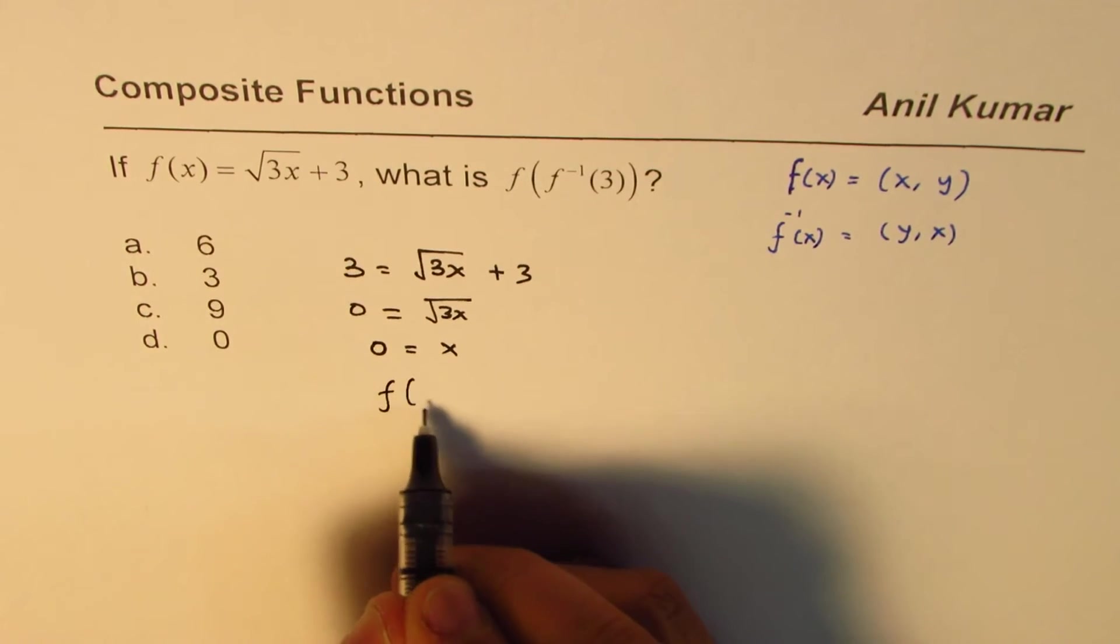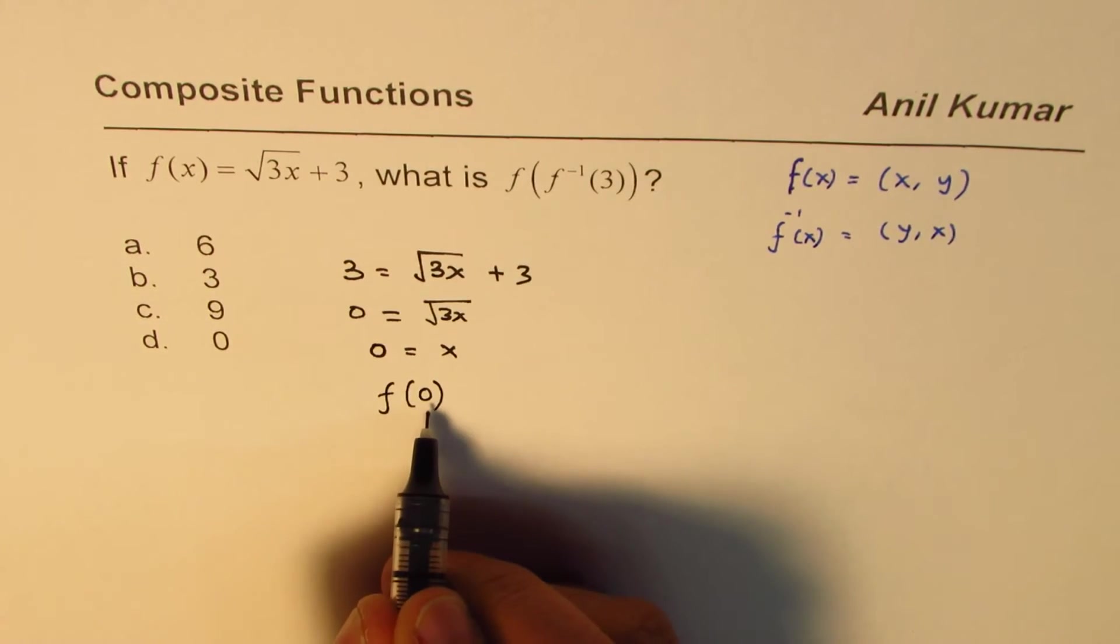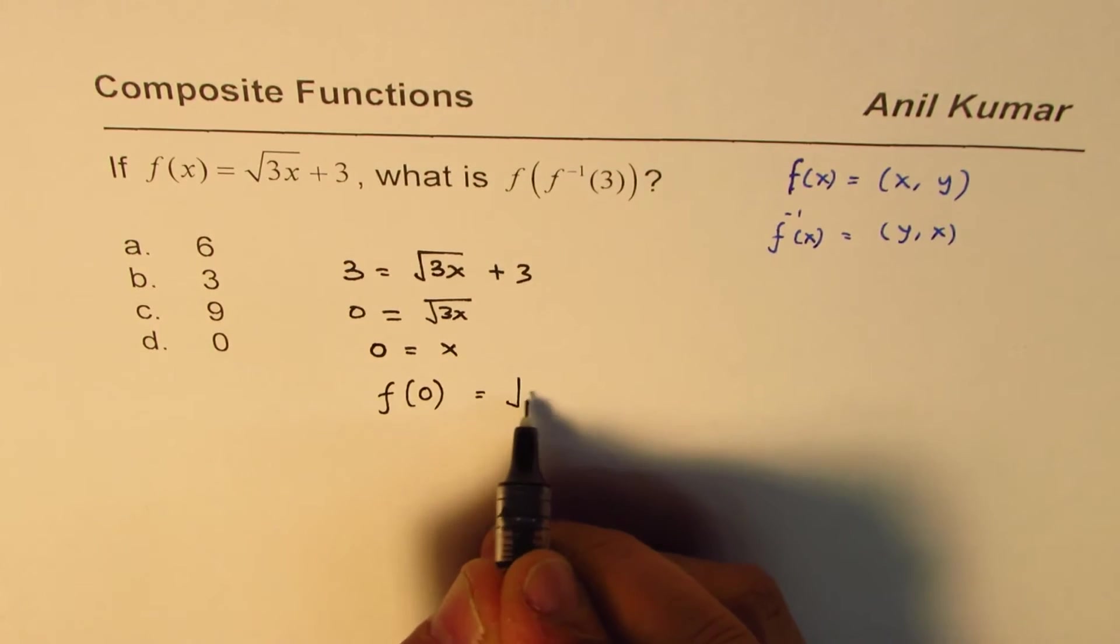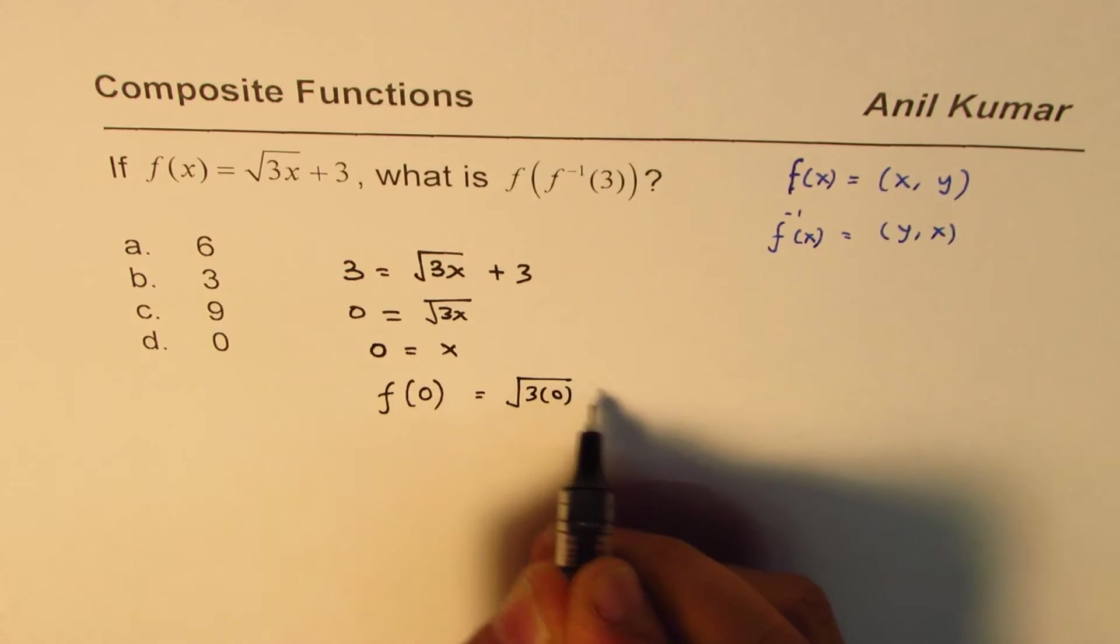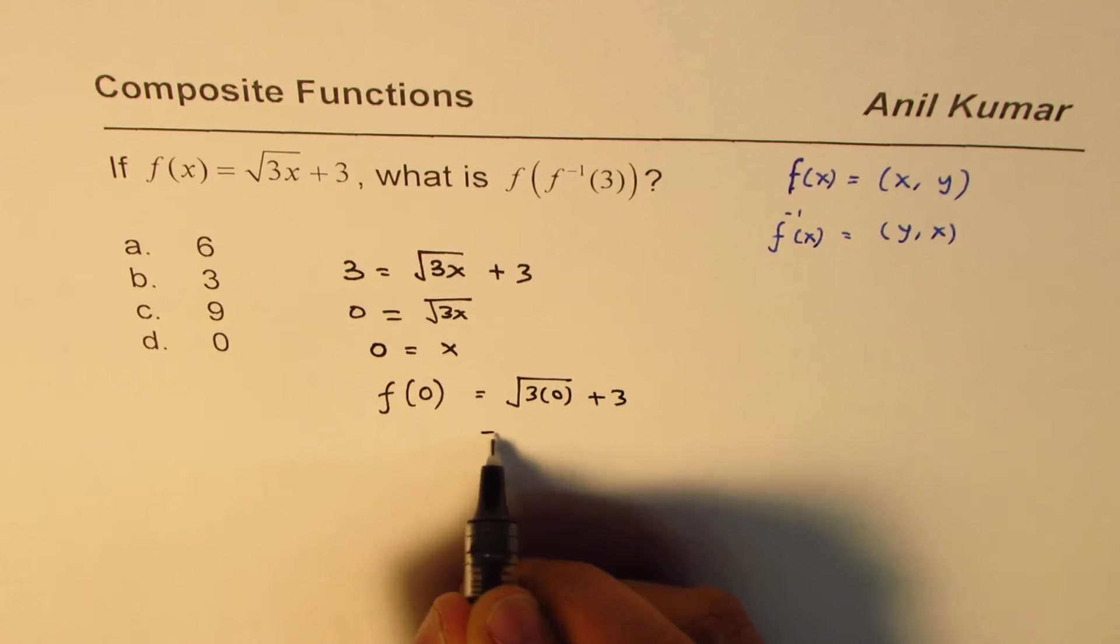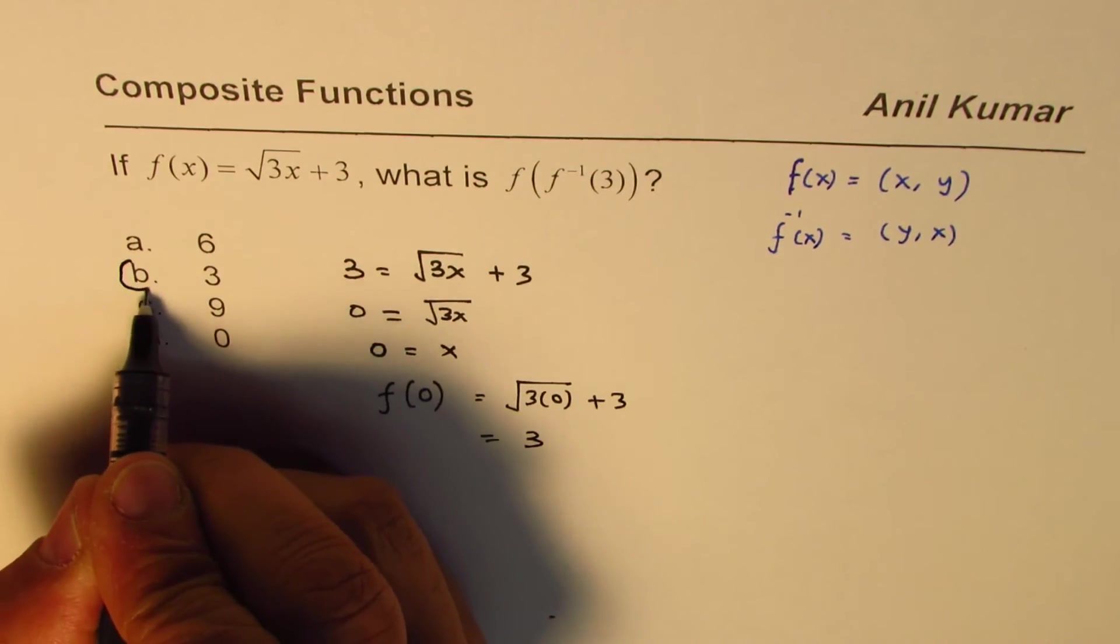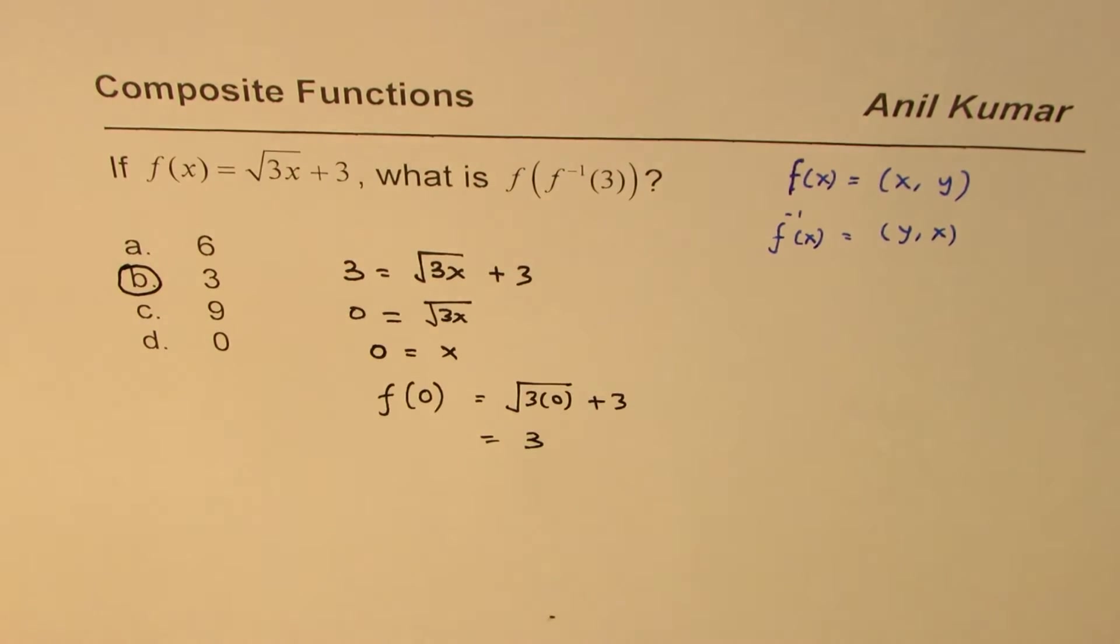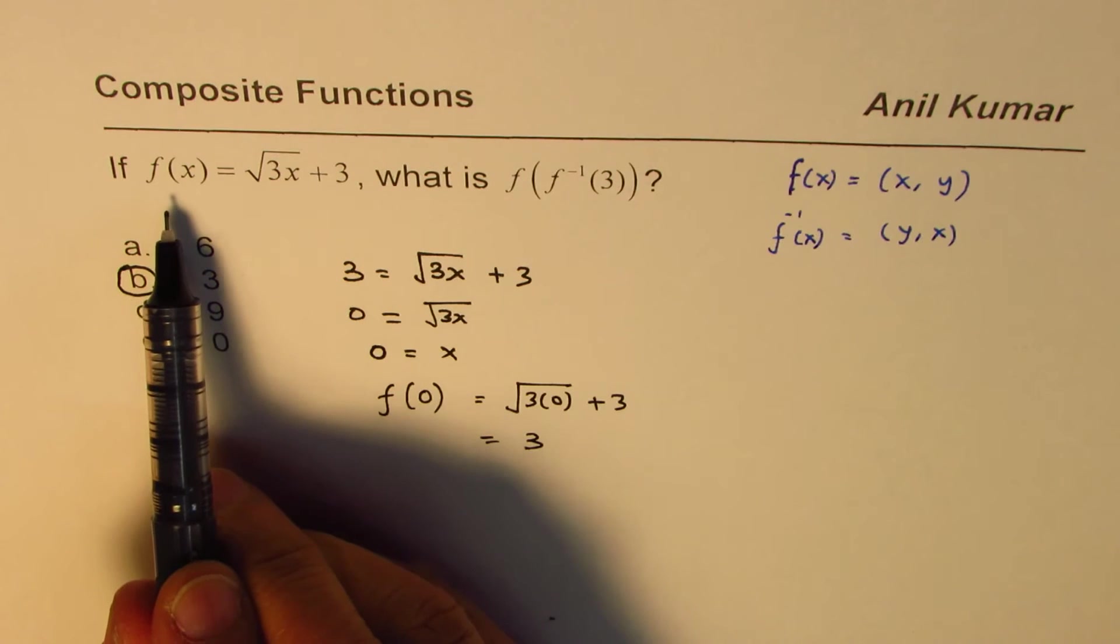So basically you're finding f(0). To find the value, substitute 0 here. That should be square root of 3 times 0 plus 3, and that is equal to 3. So option b is the correct option. While some students could find the inverse function first...